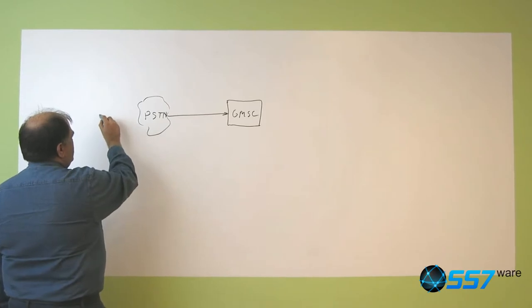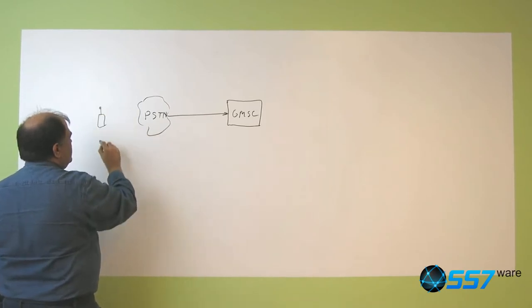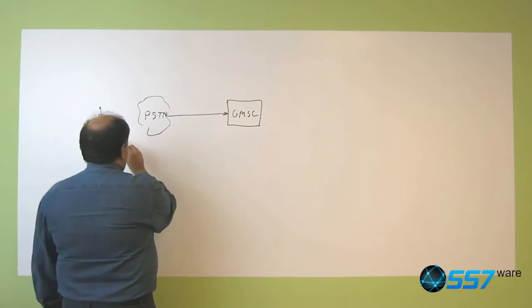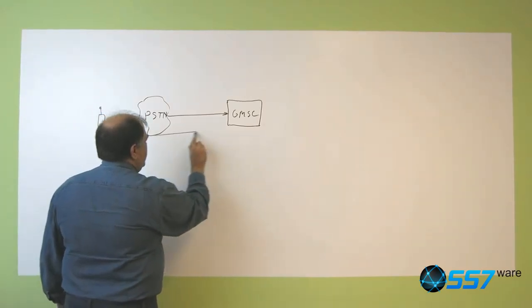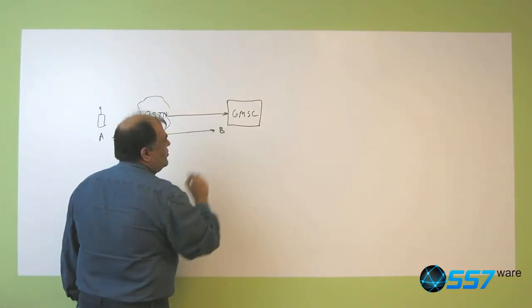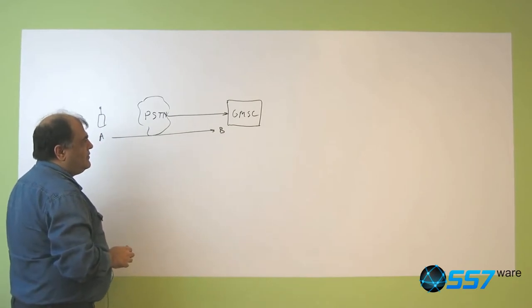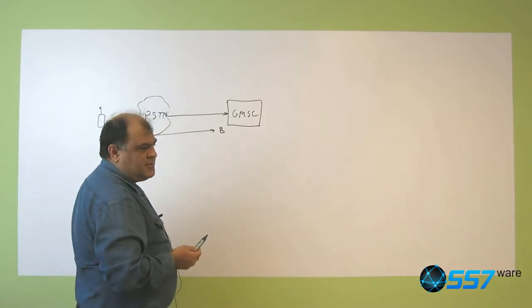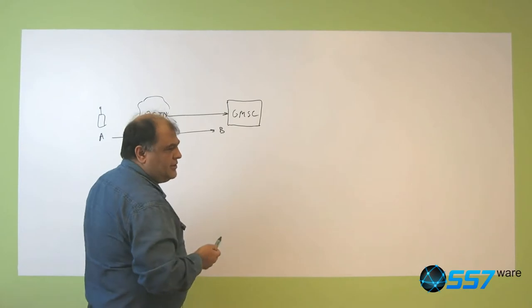Because we have here a subscriber, it can be mobile or fixed, let's call it A, that tries to call subscriber B, that's here somewhere. However, because subscriber B is mobile, it's not really in the network.